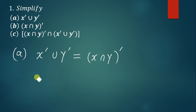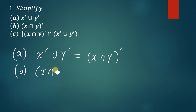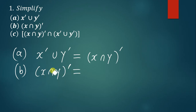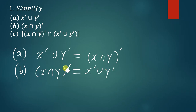Part B is just the opposite of A. We have x intersection y complement. When distributing the complement using De Morgan's Law, you change the sign in between — so the complement goes on x, the intersection sign changes to union, and the complement is also distributed to y.